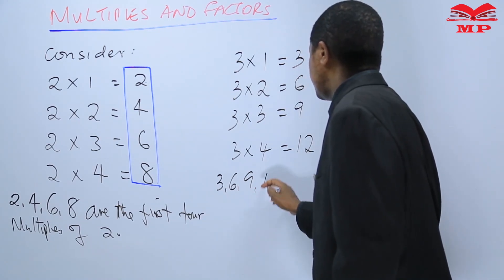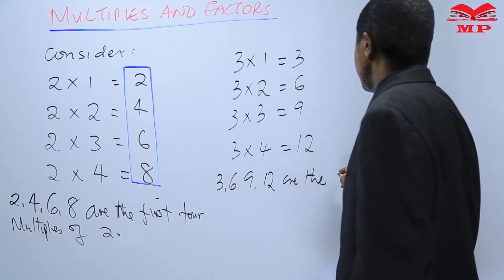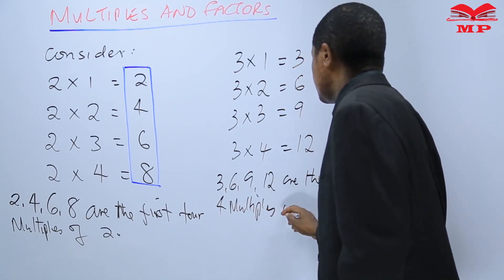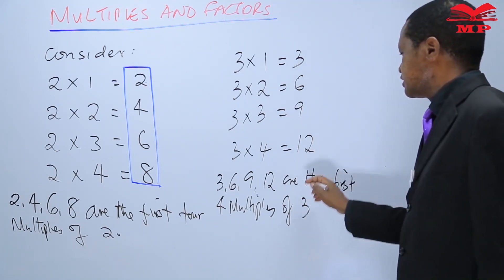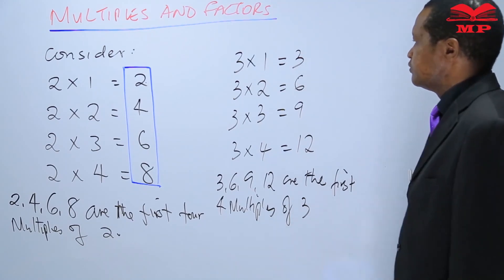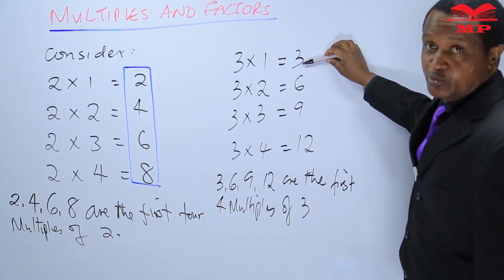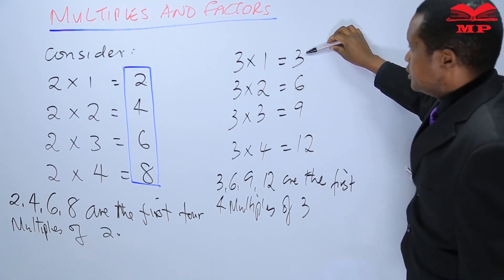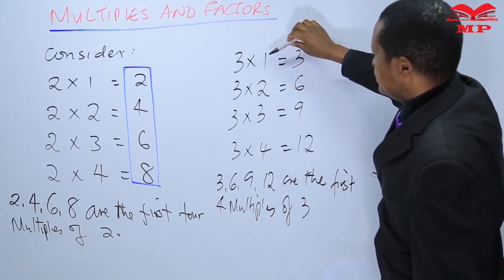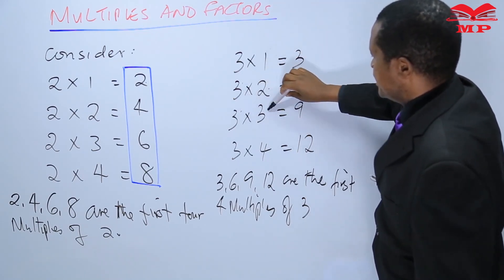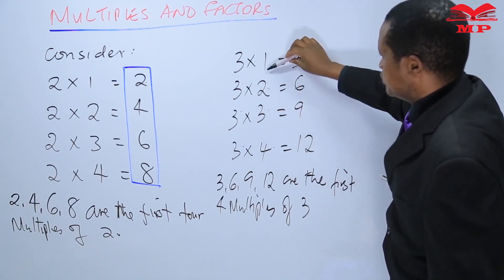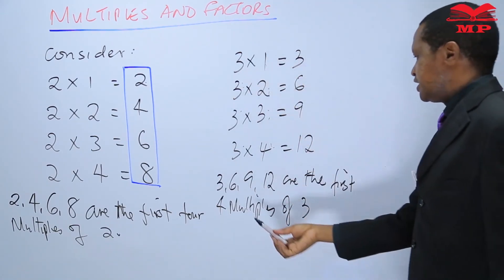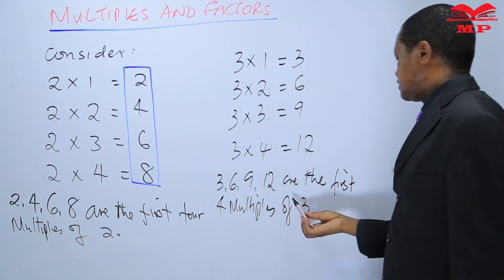Three, six, nine, and twelve are the first four multiples of three. A multiple is simply the product you get after multiplying two numbers. Here we have multiplied three by one, three by two, three by three, and three by four. So the first four multiples of three are: three, six, nine, and twelve.